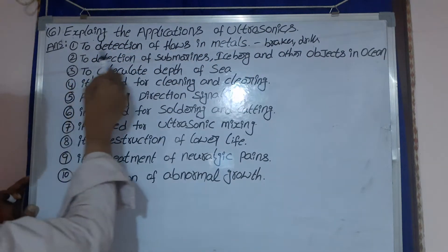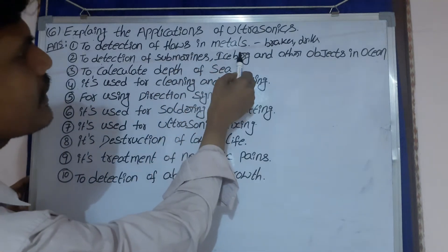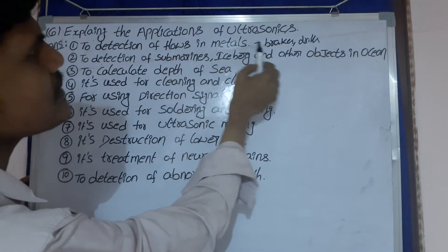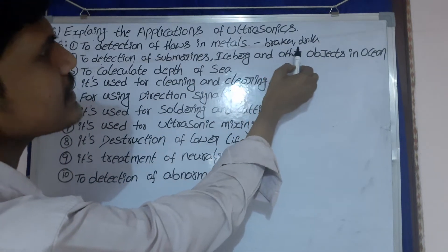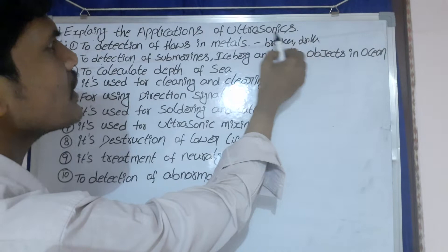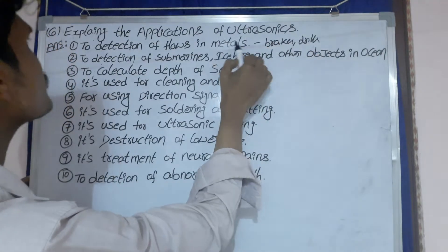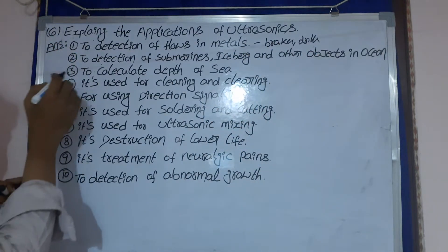First one: detection of flaws in material. Flaws means breaks or drilling. This uses the short wavelength of ultrasonic waves.